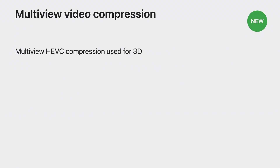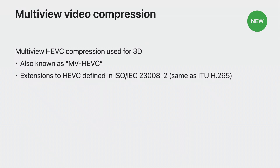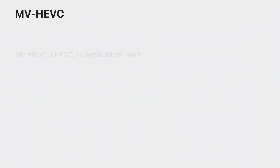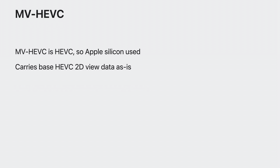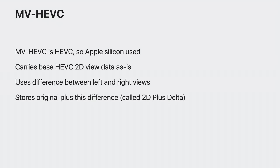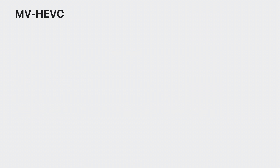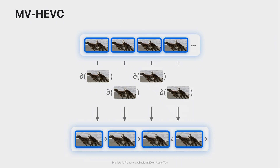To deliver stereo frames, we introduced the use of multi-view HEVC, also called MV-HEVC — an extension of HEVC carrying more than one view in each frame, so each frame has a pair of compressed left and right images. Because MV-HEVC is HEVC at its heart, Apple Silicon supports it. MV-HEVC stores the base HEVC 2D view in each compressed frame. Encoding determines a difference, or delta, between the left and right images. This technique, known as 2D plus delta, means that 2D decoders can find and use the base 2D view — for example, the left eye — while 3D decoders can calculate the other view to present both views to the corresponding eyes. Efficiency is achieved because just the differences between the left and right eye views are described in the stereo frames.